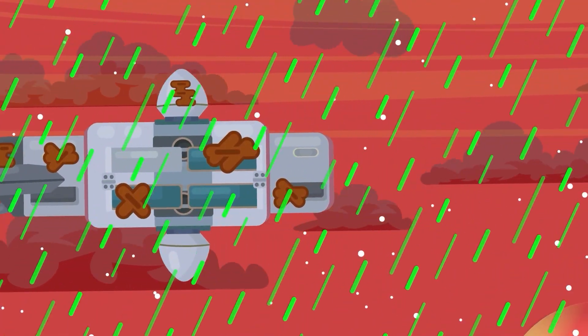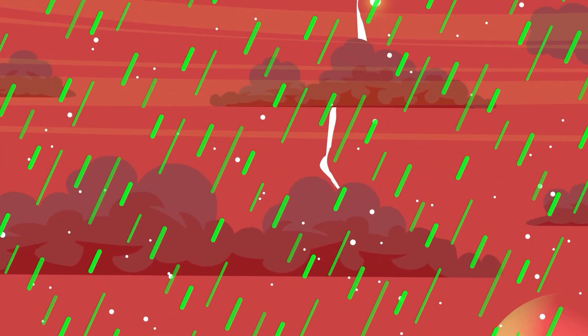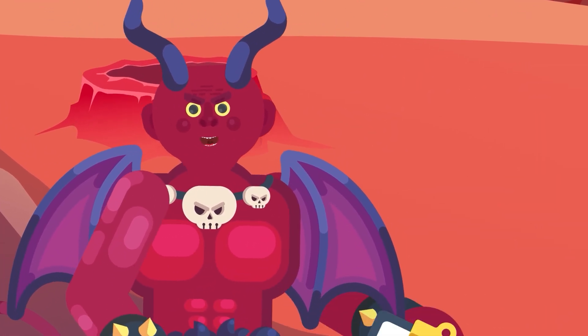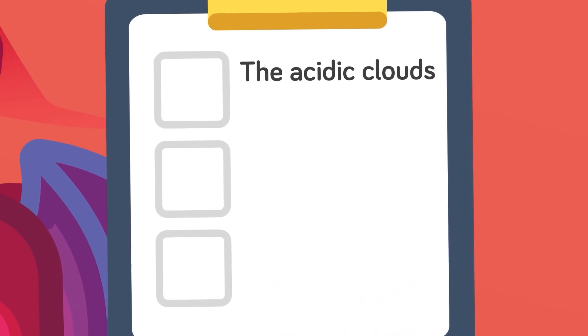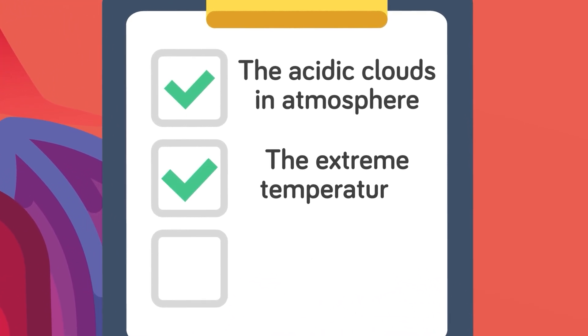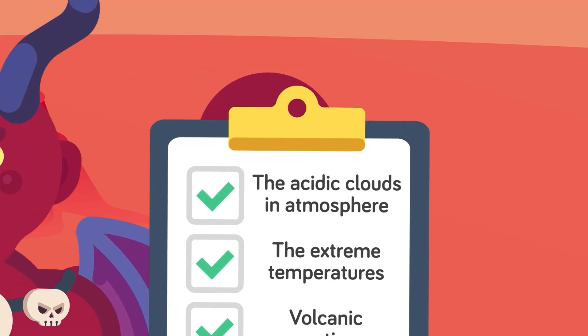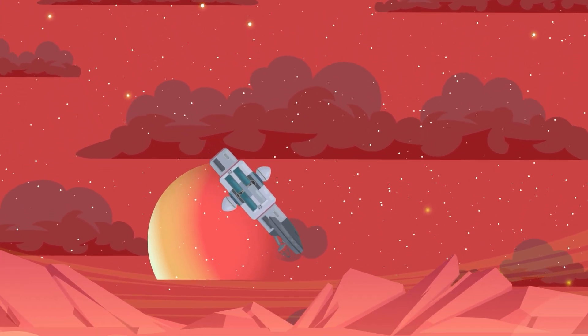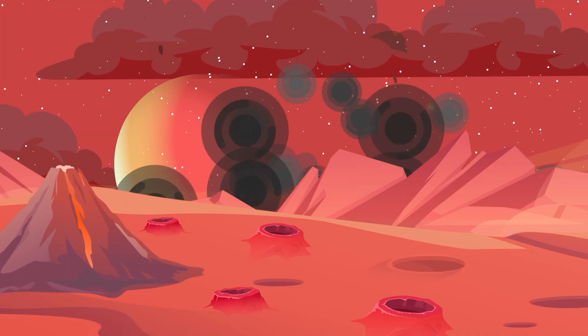To make matters even worse, sulfuric acid droplets can also carry an electrical charge, meaning they create lightning as well. Venus is nothing short of a hellish planet. Even if you weren't dissolved alive by the acidic clouds in the atmosphere, the extreme temperatures and volcanic eruptions on the surface would quickly take care of the last of your ship. Either way, a grim ending, and one that seems to await the crew of our ill-fated vessel.